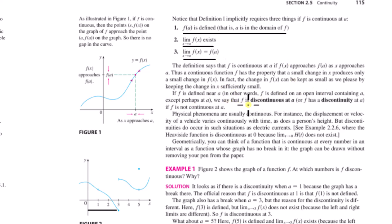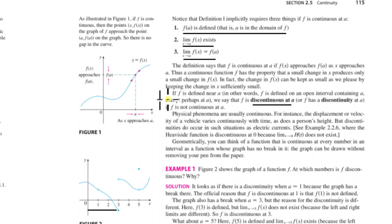They officially define what it means for something to be discontinuous: if f is defined near a, we say that f is discontinuous at a if f is not continuous at a. What you want to notice is this only applies if f is defined near a — the function needs to be defined in the region around a.